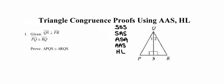Let's go ahead and look at the givens. The first given is that segment QS is perpendicular to segment PR. That perpendicular symbol means right angles, so line segments QS and PR intersect in a way that forms right angles — they've already marked that in the picture. The second given is that segment PQ is congruent to segment RQ.